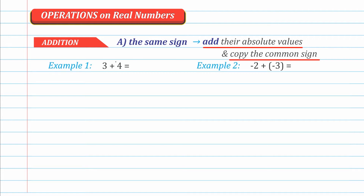Let's look at example 1: 3 plus 4. We know the answer is 7, but let's use this method and verify. First step: add their absolute values. The absolute value of 3 is 3, and the absolute value of 4 is 4. Adding them gives 7. That's just the first step. Second step: copy the common sign. The common sign of 3 and 4 is positive. So the answer is positive 7, which we simply write as 7.